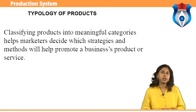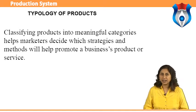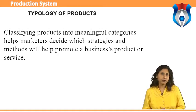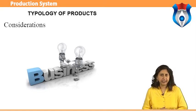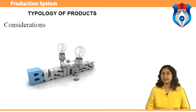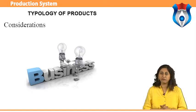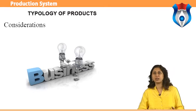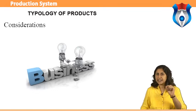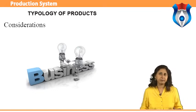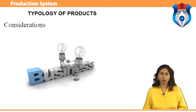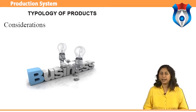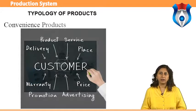Let us now discuss the typology of products. Classifying products into meaningful categories helps marketers decide which strategies and methods will help promote a business product or service. Many types of classification exist. The key is to categorize products in ways that make sense for the business — for example, to design separate marketing campaigns for each category of product. No simple recipe exists for categorizing products and services, but there are some common product classifications in marketing: convenience, shopping, specialty, and unsought products.